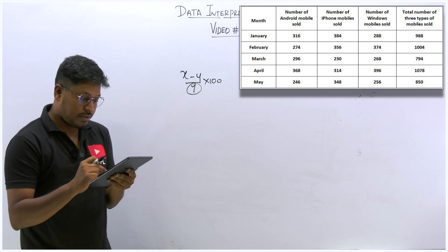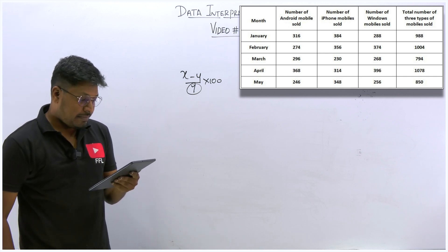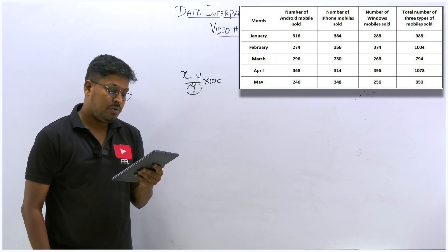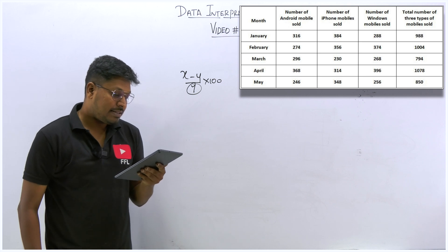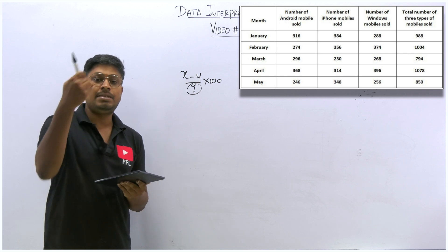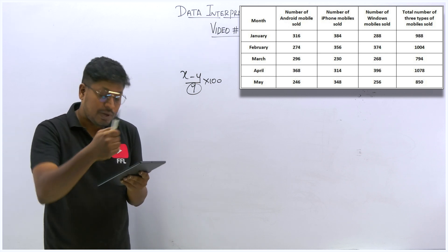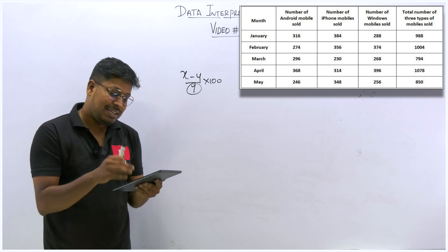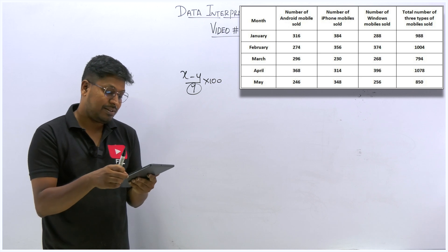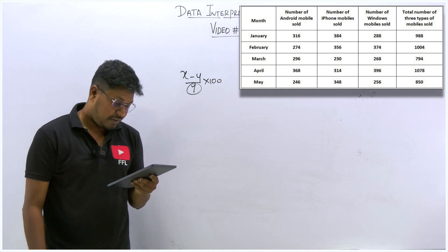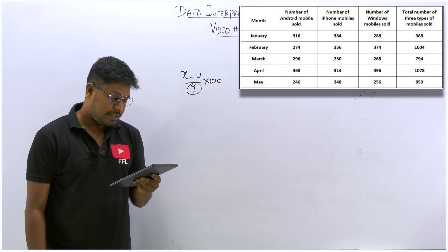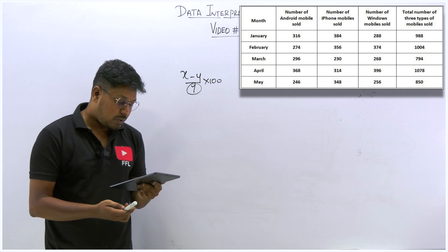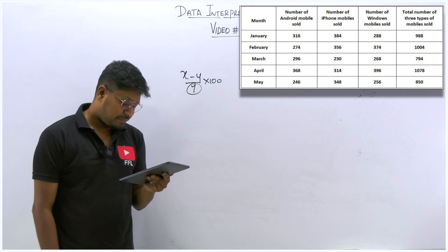The answer to the third question is approximately 32.8%. The fourth question: in June month the total number of mobile phones sold was 25% more than the previous month, and the average number of Android and Windows sold is 382 — find the number of iPhones sold. Since it's 25% more than the previous month, consider the previous month as 100% and June as 125%. Find the total, then subtract the combined Android and Windows sold to get iPhones alone.